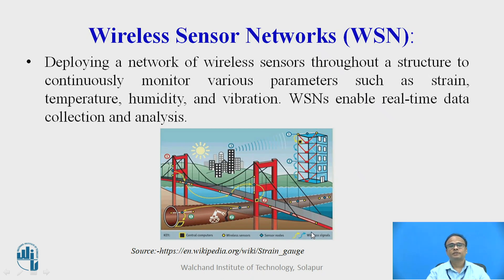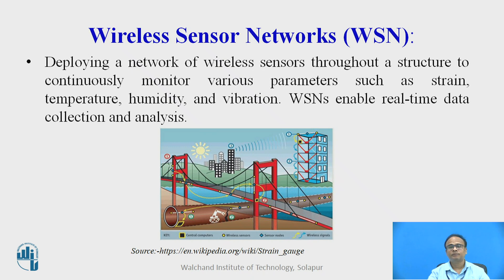Wireless sensor network. Deploying a network of wireless sensors throughout a structure to continuously monitor various parameters such as strain, temperature, humidity and vibration. WSNs enable real-time data collection and analysis. You can see a typical bridge and building where information regarding temperature, strain and humidity can be obtained without using wires. This is helpful for getting real-time data and for further analysis of the structure.